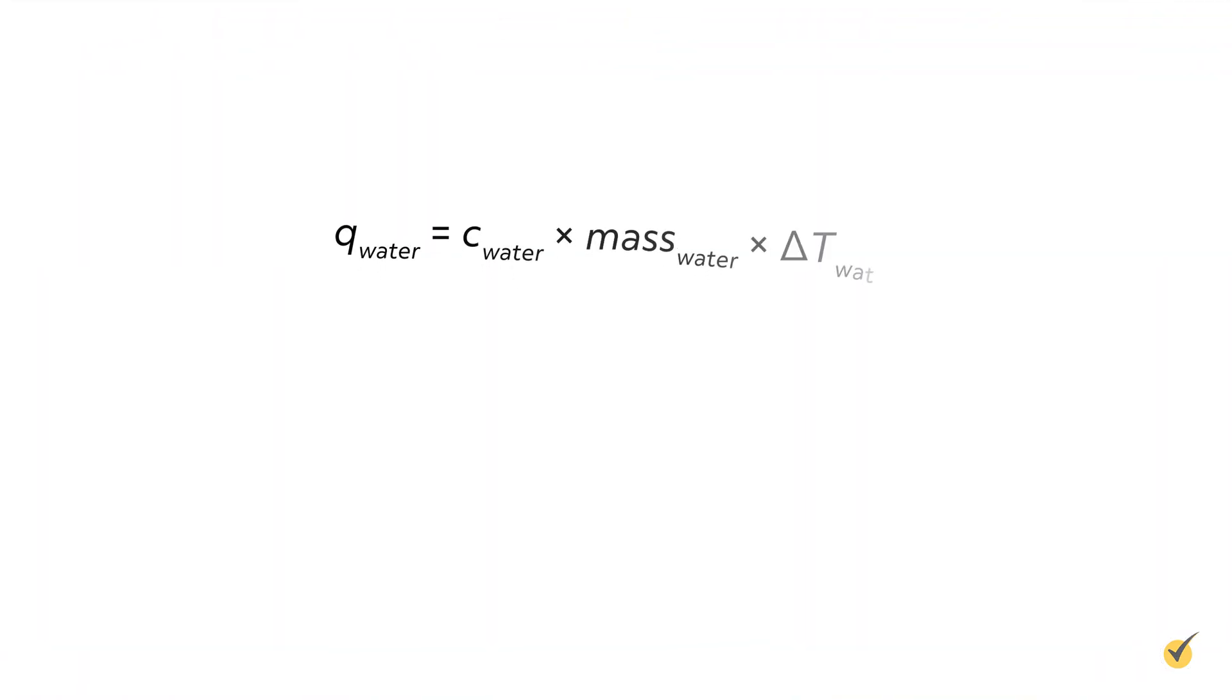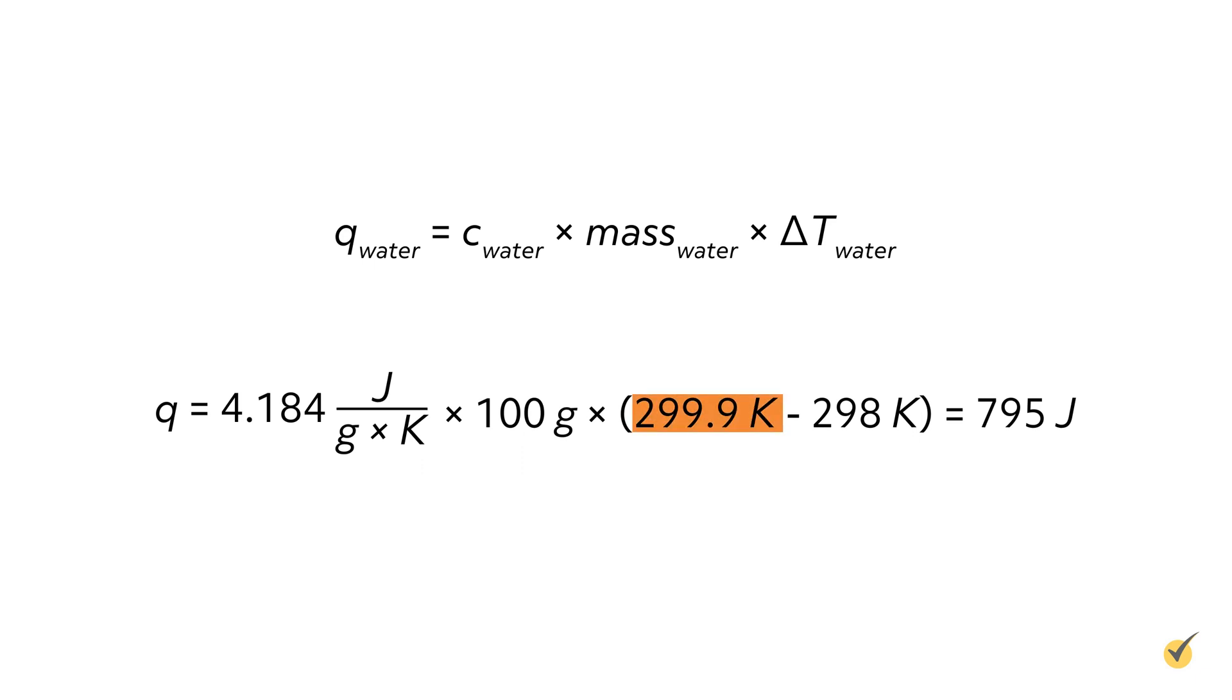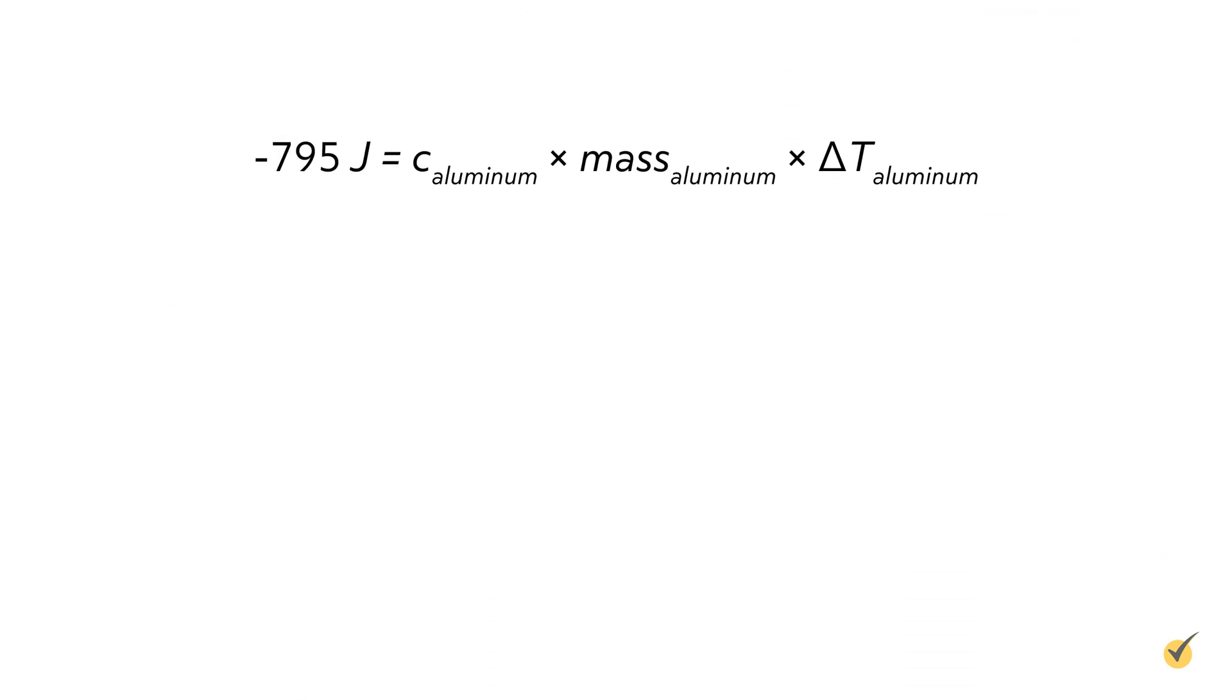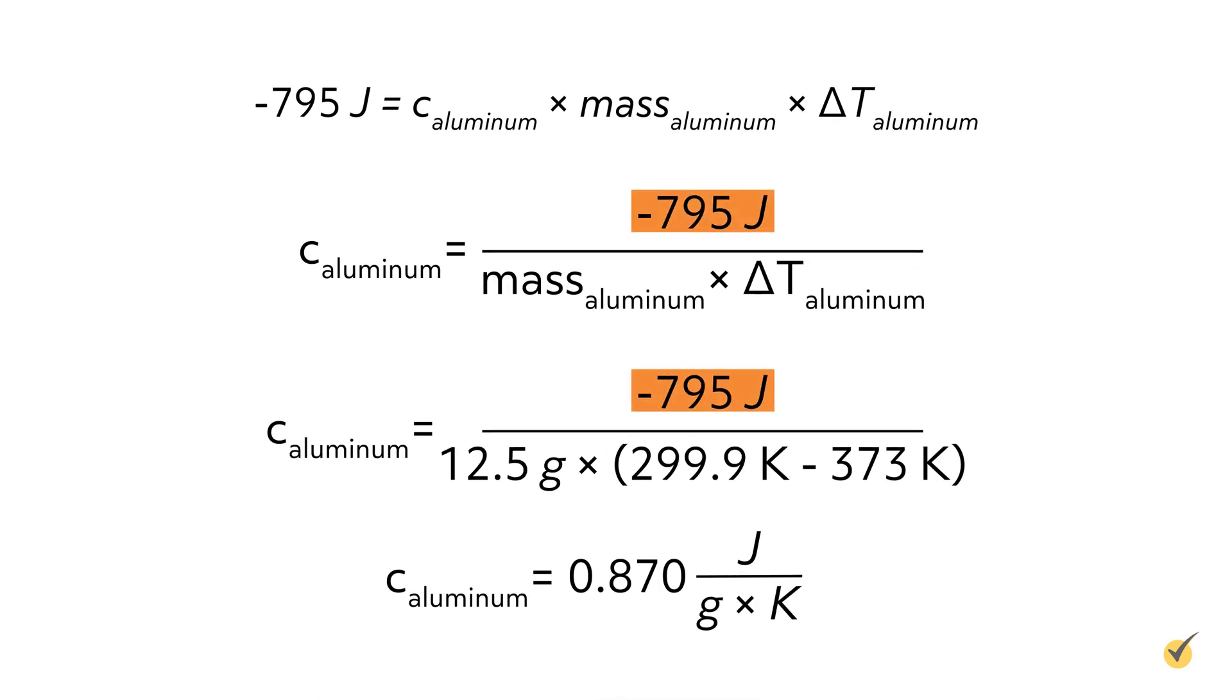All right, let's see how that small change in temperature impacted the result. We still begin by calculating the amount of heat absorbed by the water, but now the final temperature is 299.9 Kelvin instead of 299.7 Kelvin, which gives us 795 joules. Now plug that value into the equation for the aluminum heat capacity. Remember, it should be negative 795 joules, and you need to change the final temperature here as well. Now our experimental value is 0.870 joules per gram Kelvin.